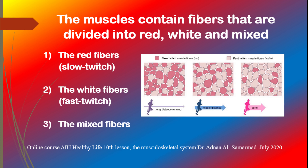The 656 muscles in your body weigh up to 60% of your body mass in men and up to 45% in women. The muscles contain fibers which are divided into red, white, and mixed. This determines the performance for a certain body part. Each muscle group varies from body part to body part and from person to person.